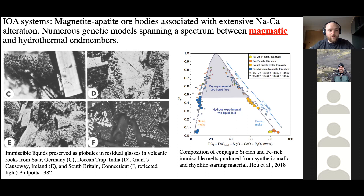However, these experimental studies are challenging because many involve starting materials or run products that don't precisely replicate the geochemistry seen in IOA systems — in terms of host rocks and the IOA ores themselves. In several models, temperatures needed to stabilize an iron-rich melt exceed what thermometry generally infers for IOA formation. There is also the broader problem of how you would emplace an iron-rich melt, given that it would have a great density contrast with its parental silicate melt and would likely sink rather than float.